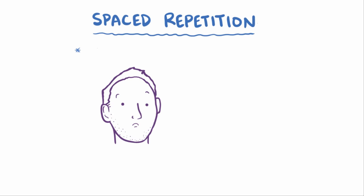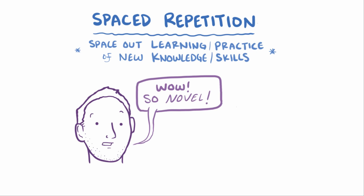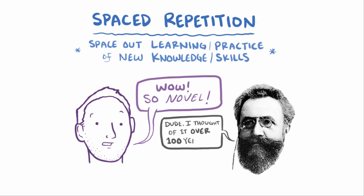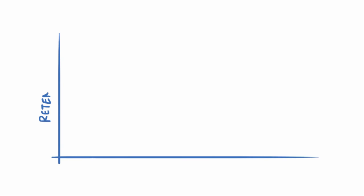One evidence-based way to better remember what you've learned is through spaced repetition, or spacing out your learning and practice of new knowledge or skills. Although this might seem novel, this is hardly a new concept. It was first described in 1885 by a German psychologist named Hermann Ebbinghaus.